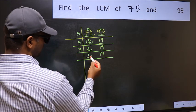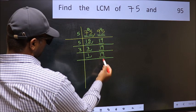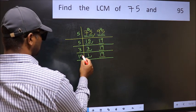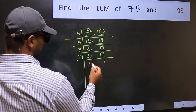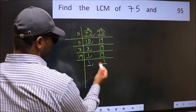Now we got 1 here, so focus on the next number, 19. 19 is a prime number, so 19 times 1 is 19. So we got 1 in both places.